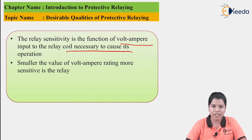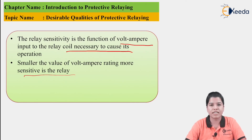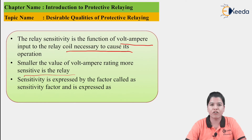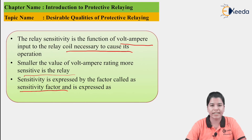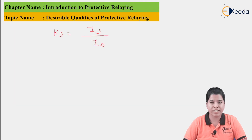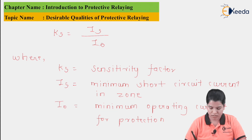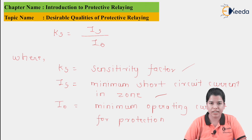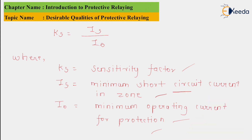The smaller the value of volt-ampere input, the higher the sensitivity of the relay. The sensitivity of a relay is expressed by the sensitivity factor S = IS / I0, where IS is the minimum short-circuit current in the zone and I0 is the minimum operating current for protection. The ratio of IS to I0 is called the sensitivity factor, denoted as KS (or AS).